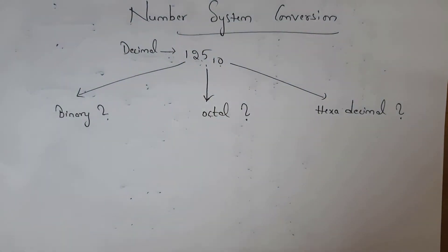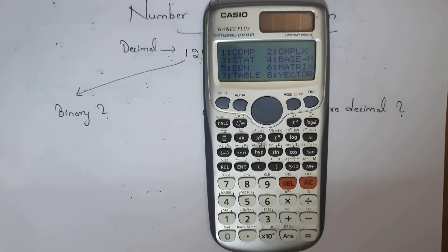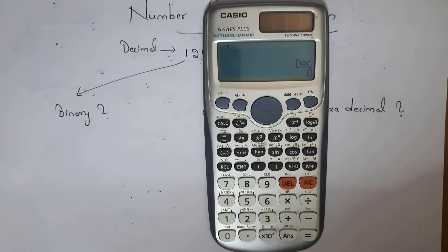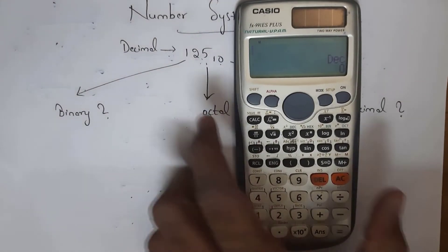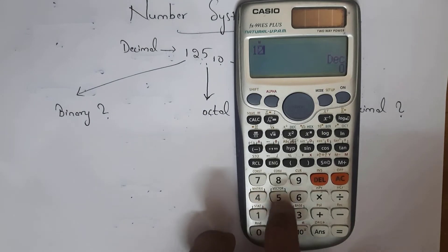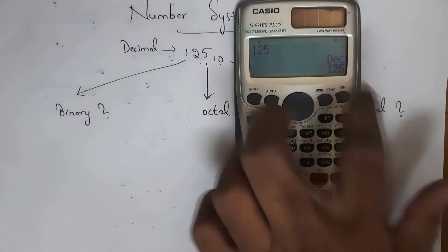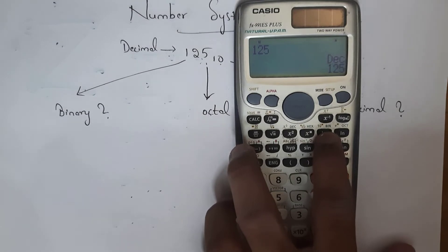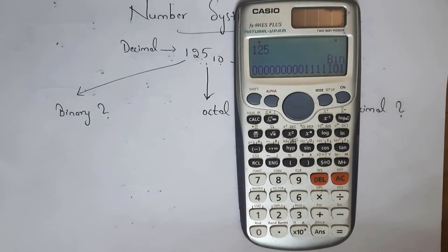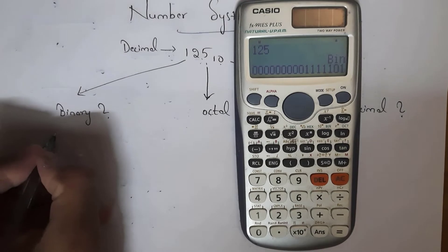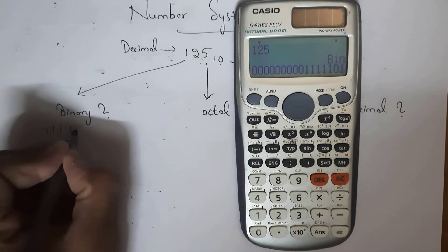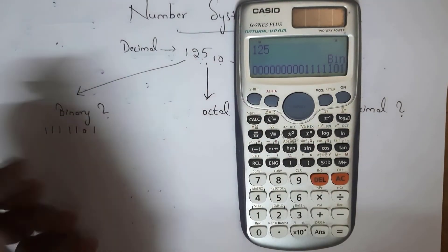I want to convert decimal number 125 into binary, octal, and hexadecimal using a calculator. First, click on Mode, select Base N by pressing 4 — by default it shows decimal. Enter 125 and press equals. Now click the binary (BIN) option. The result is 1111101 — count from the first 1, ignoring leading zeros.